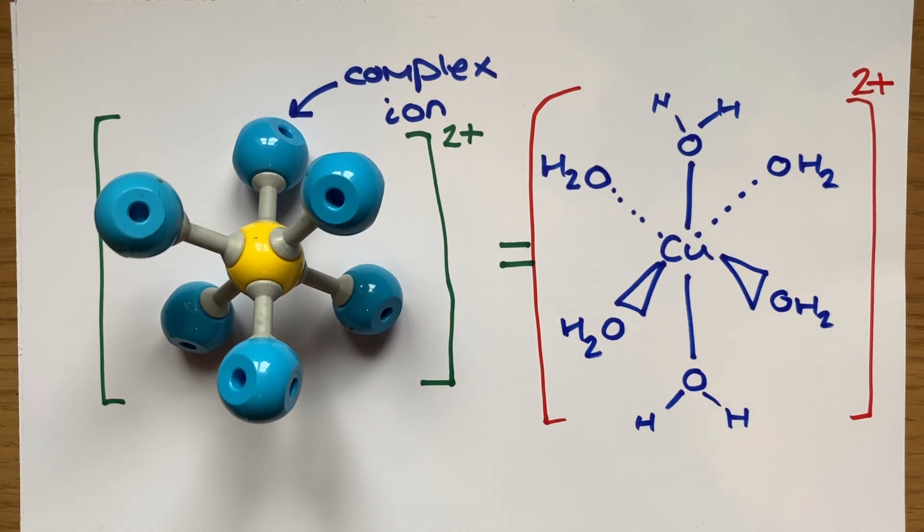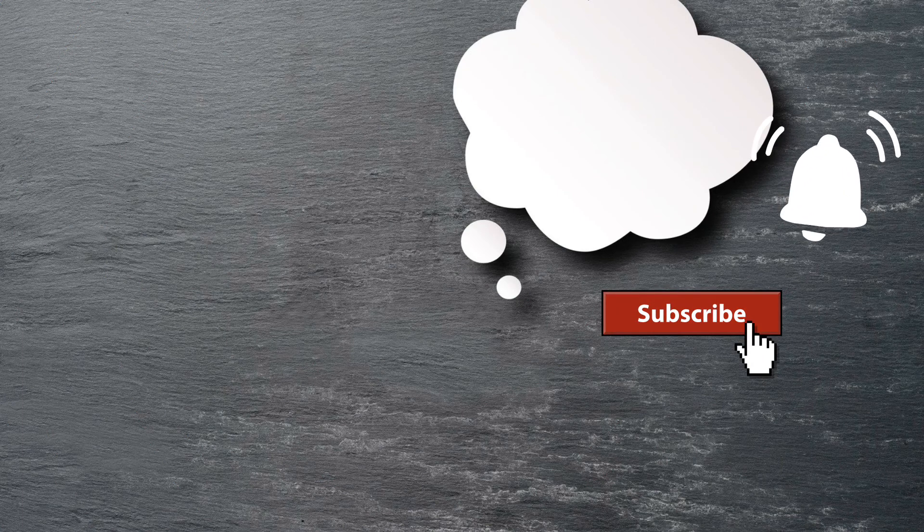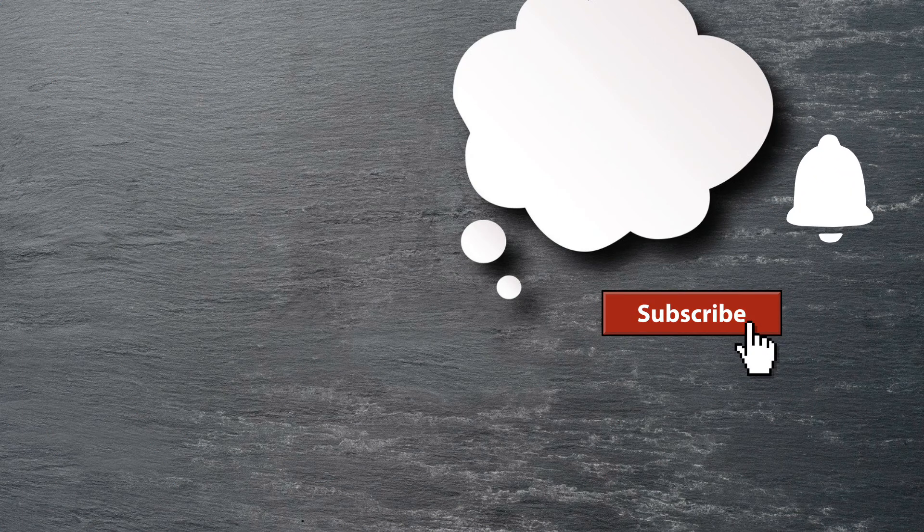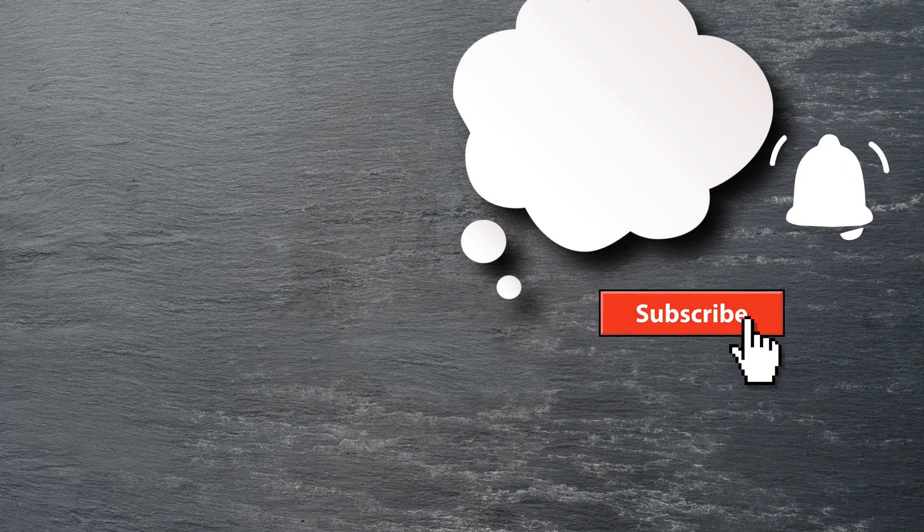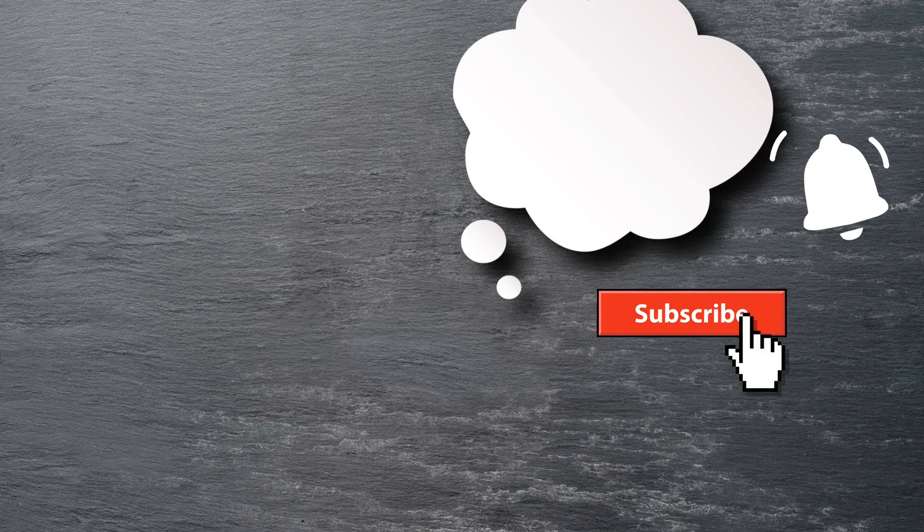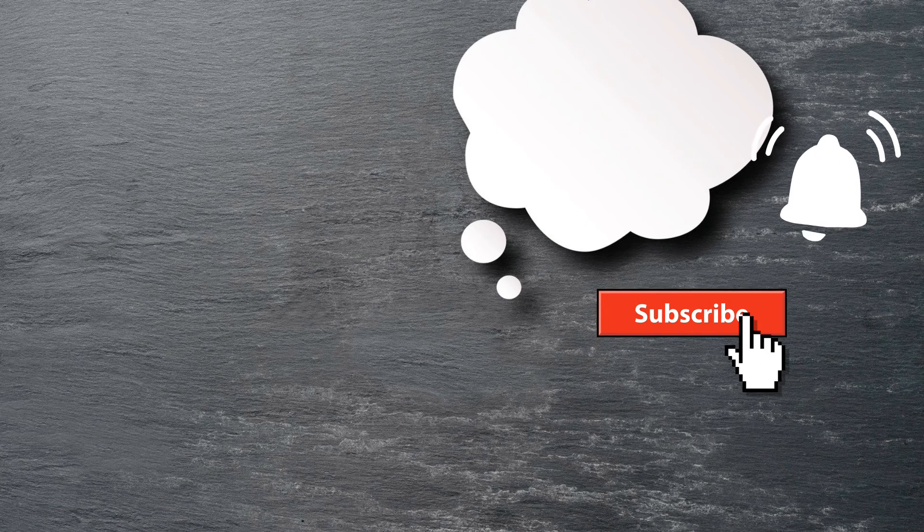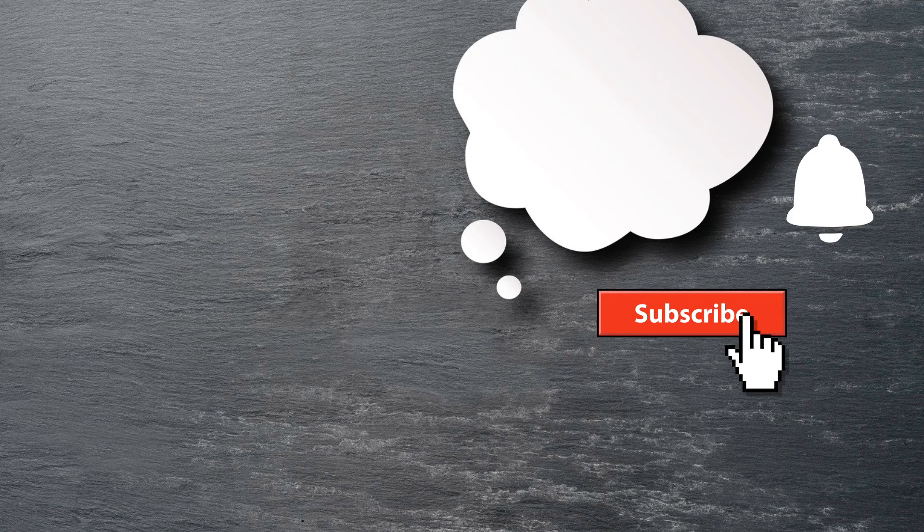If you want to take the content from this video a little further then I recommend you start researching examples that use other monodentate ligands like chloride ions or cyanide examples and I also recommend you start to research what is meant by the term bidentate ligand. There should be some links to videos on screen now that can help you out with this and until next time happy revising.